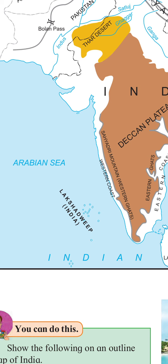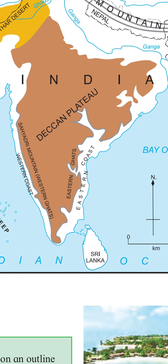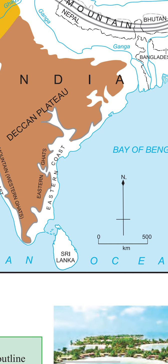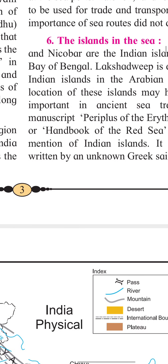India had very good trade relations with western countries, especially European countries, mainly through the Arabian Sea. Later, many ports developed — including Kochi, Mumbai, Surat, Vishakhapatnam, and Kolkata — in the later period. That covers our coastal region.